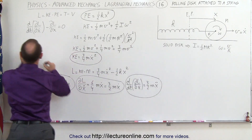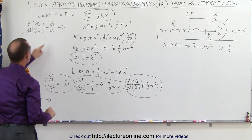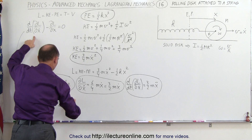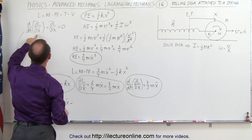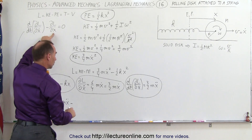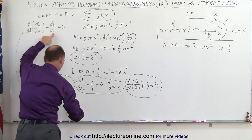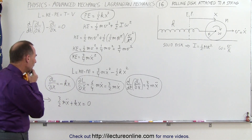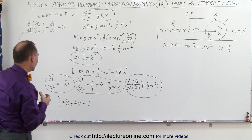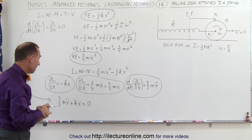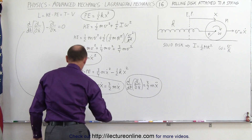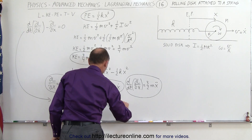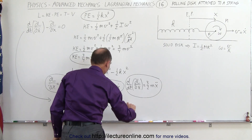Now we're ready to plug that into the Euler-Lagrange equation. Taking the first term, three over two m x-double-dot, minus the partial of L with respect to x — but minus times minus is plus — that becomes plus k times x equals zero. Multiplying both sides by two thirds and dividing by m, the equation becomes x-double-dot plus two thirds times k over m times x equals zero.